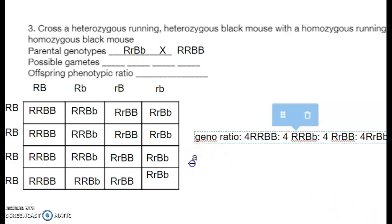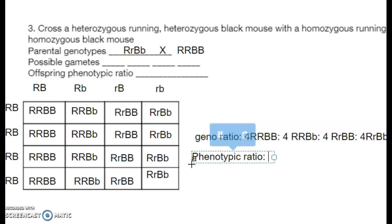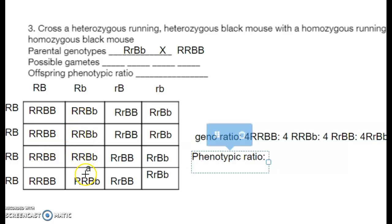For the phenotypic ratio — that's physical appearance — anything with at least one big letter shows the dominant trait. All boxes have at least one big R and one big B, so the phenotypic result is 16 running black.